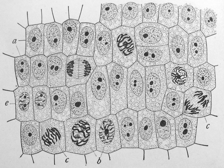Cell division involves a single cell dividing into two daughter cells. This leads to growth in multicellular organisms and to procreation in unicellular organisms. Prokaryotic cells divide by binary fission, while eukaryotic cells usually undergo a process of nuclear division called mitosis, followed by division of the cell called cytokinesis. A diploid cell may also undergo meiosis to produce haploid cells, usually four. Haploid cells serve as gametes in multicellular organisms, fusing to form new diploid cells. DNA replication always happens when a cell divides through mitosis or binary fission, occurring during the S phase of the cell cycle. In meiosis, the DNA is replicated only once while the cell divides twice. DNA replication only occurs before meiosis I and does not occur during meiosis II. Replication, like all cellular activities, requires specialized proteins for carrying out the job.